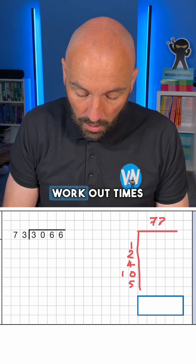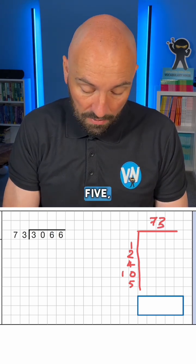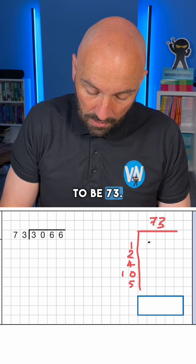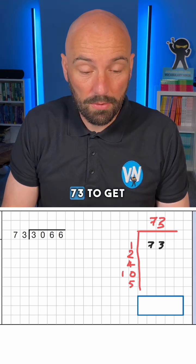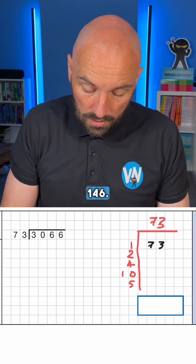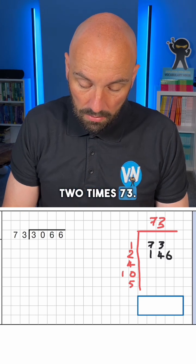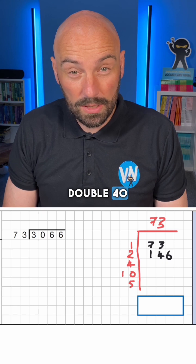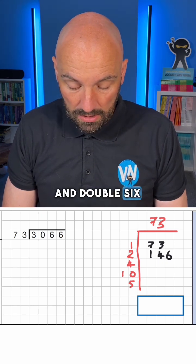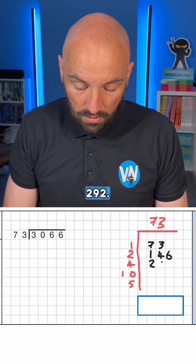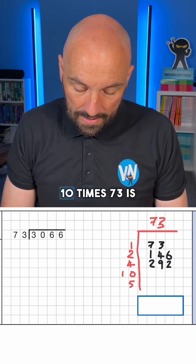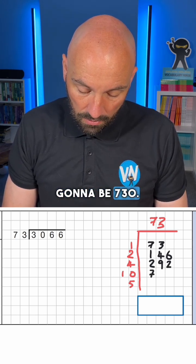It might be that we can't work out times 5, and that's totally fine. One lot is going to be 73. We're going to double 73 to get 146, so we know that's 2 times 73. We're going to double that again: double 100 is 200, double 40 is 80, and double 6 is 12, so that gives us 292. And 10 times 73 is going to be 730.